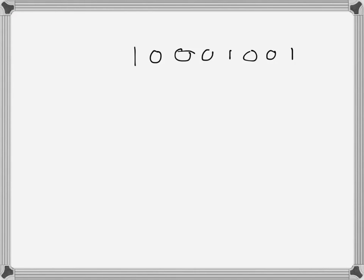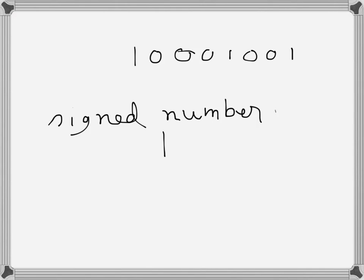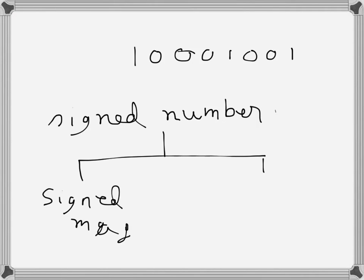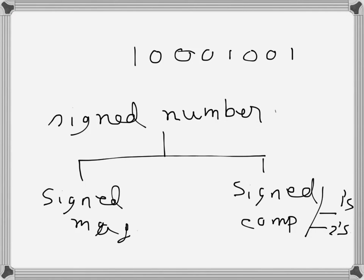Signed number representation is used for expressing negative numbers. There are two kinds of signed representation: one is signed magnitude representation, and the other is signed complement representation. In signed complement, there are two further kinds: one's complement and two's complement representation. These are the ways we represent negative numbers in binary.